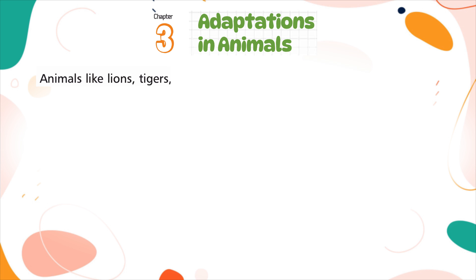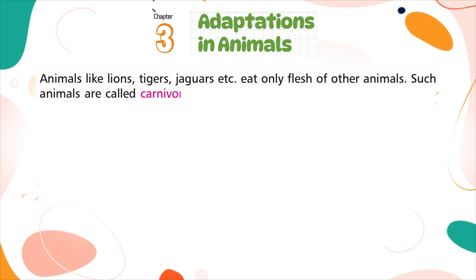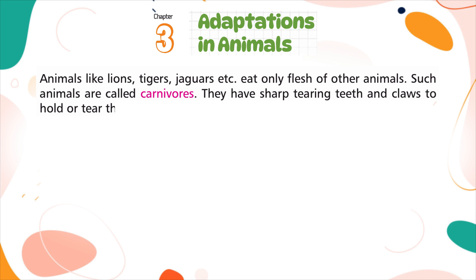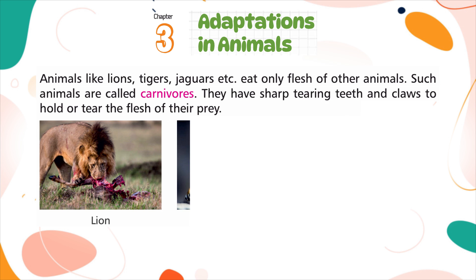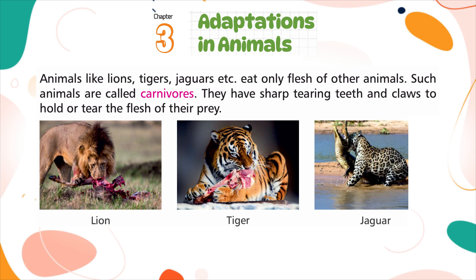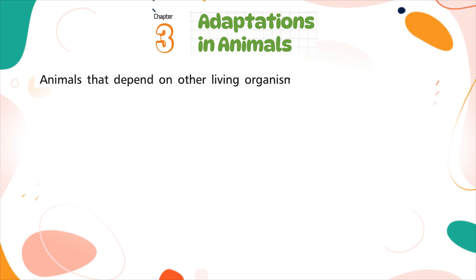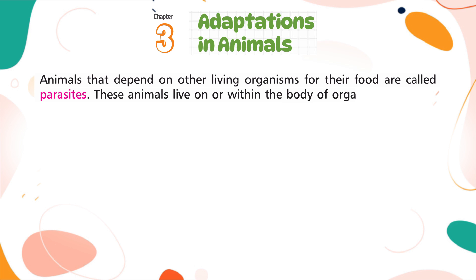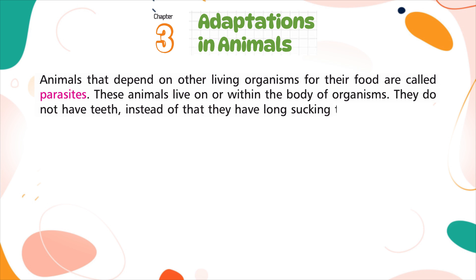Animals like lions, tigers, and jaguars eat only the flesh of other animals and are called carnivores. They have sharp, tearing teeth and claws to hold or tear the flesh of their prey. Animals that depend on other living organisms for their food are called parasites. These animals live on or within the body of organisms. They do not have teeth; instead, they have long sucking tubes or suckers to suck blood from organisms' bodies.